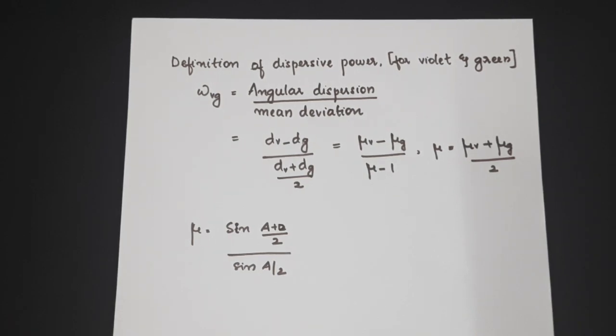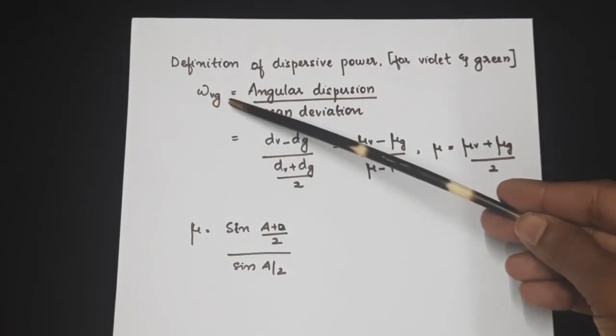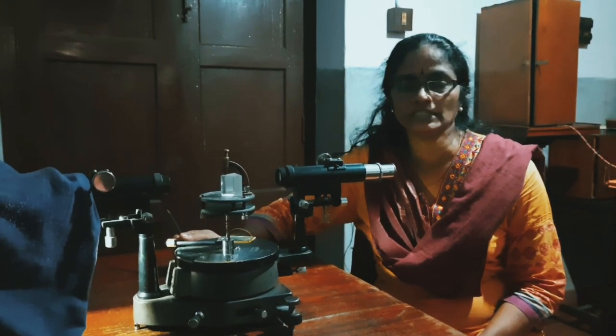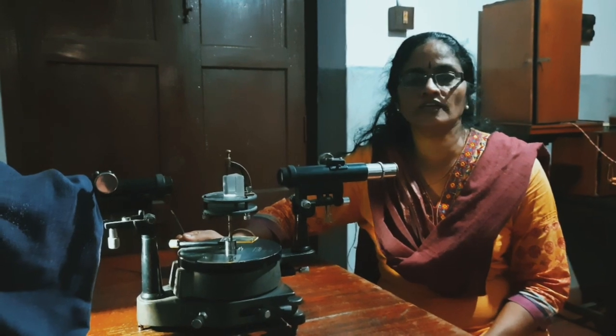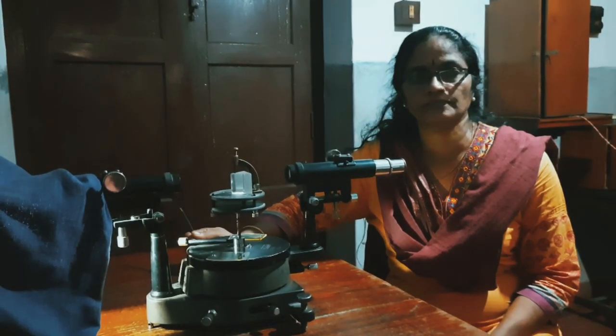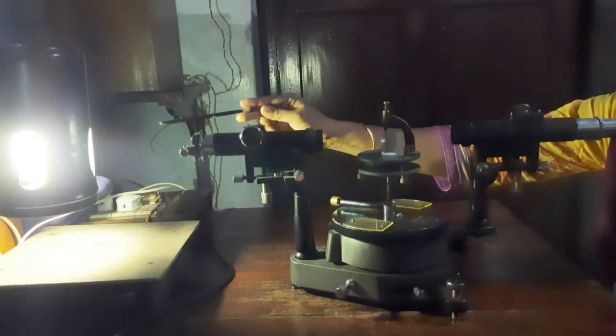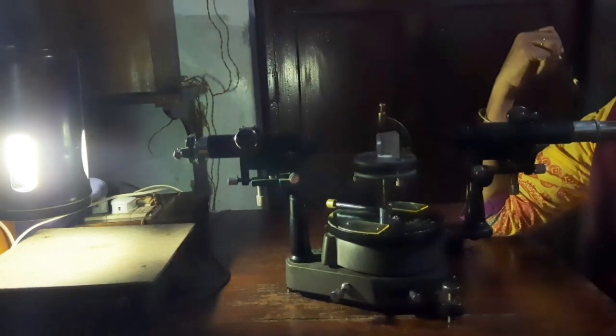This calculation for dispersive power can be repeated for various combinations of colors. The experimental procedure for finding out the dispersive power would start with finding out the angle of the prism. In this experiment, we will be using the white light of the mercury lamp as a source.